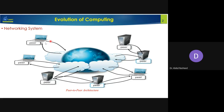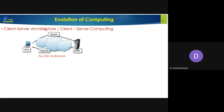In a networked system, we have a small server and a number of systems connected to it. This provides more convenience to users. A number of people, otherwise called peers, can sit at any system and store their files into a publicly available server. This server is also used for retrieval, so users can sit at any system to retrieve their files.